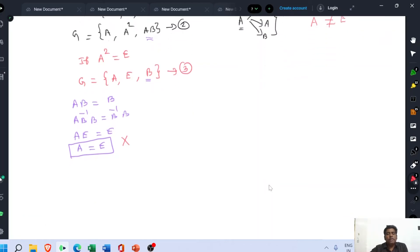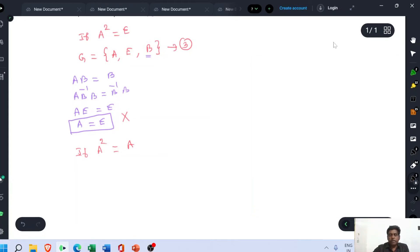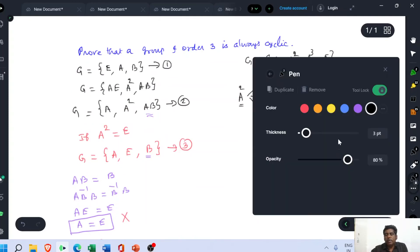Then the second condition is, if A square is equal to A. If A square is equal to A, multiply both sides by A inverse. A inverse A square is equal to A inverse A. This is A equal to E. Once again we have had the same condition, which is also wrong. So the second option is also wrong.